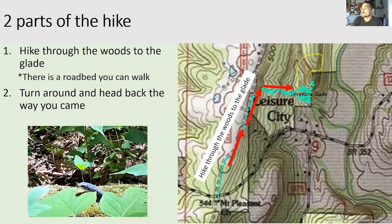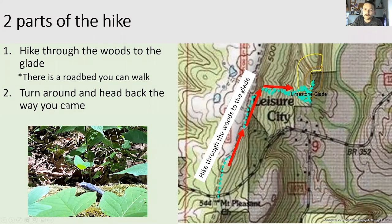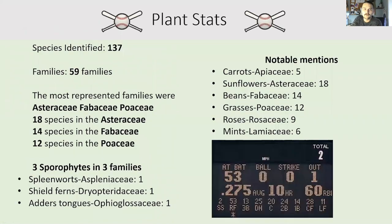The hike has been divided into two parts. Part one is a hike through the woods to the glade, along that road leading up to the limestone glade. Part two is to turn around and come back, since it's a there-and-back — it's a pretty straightforward hike.